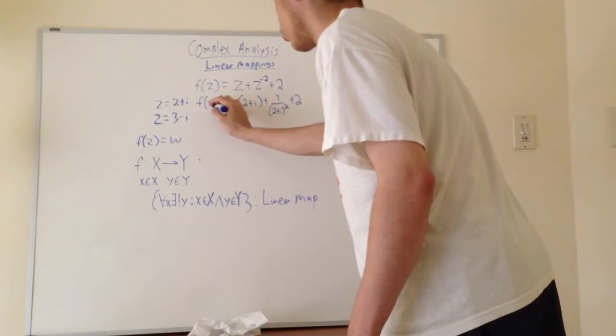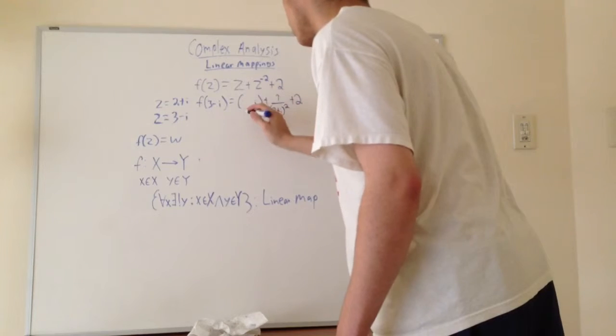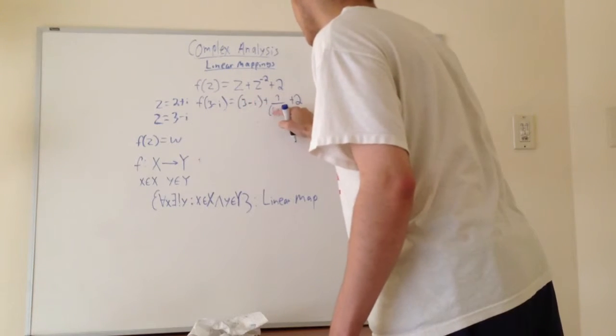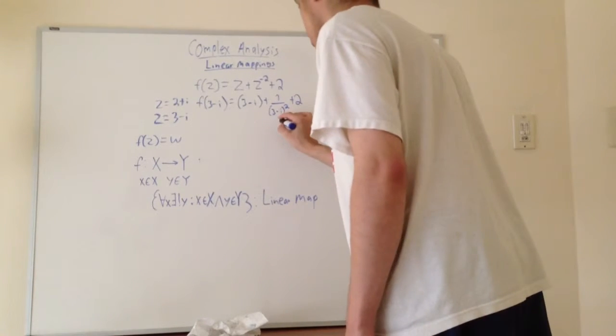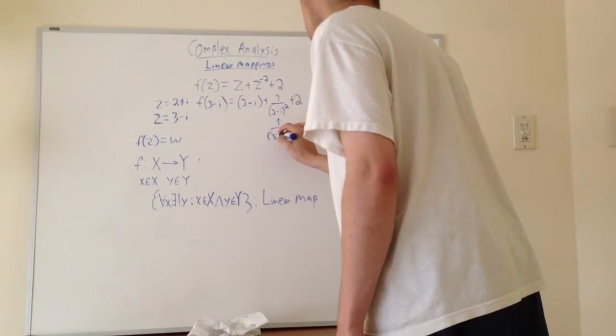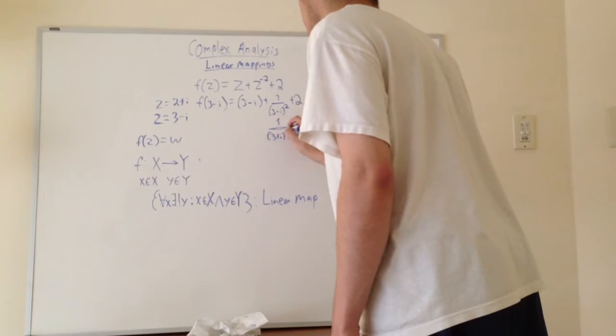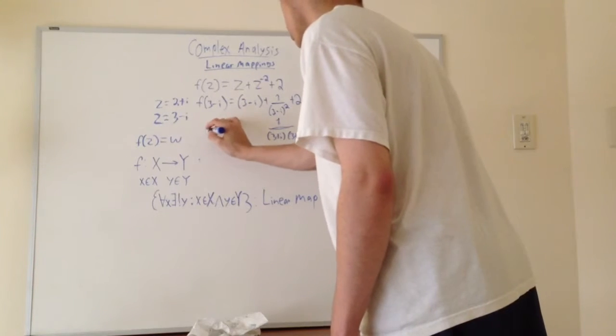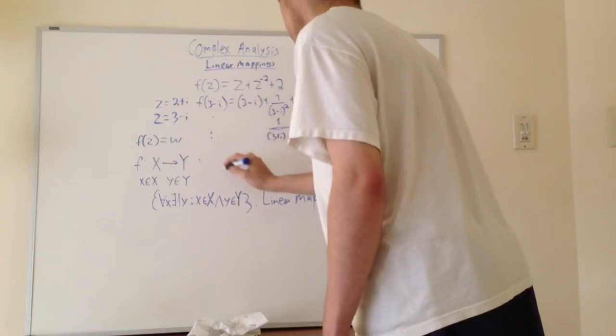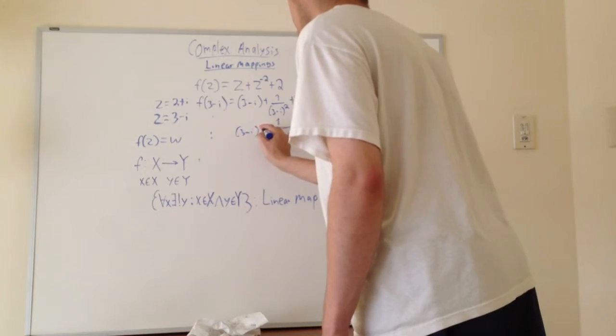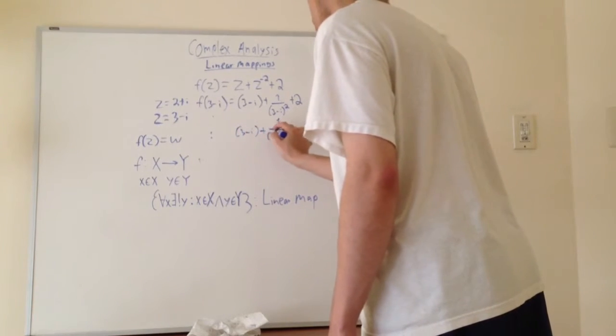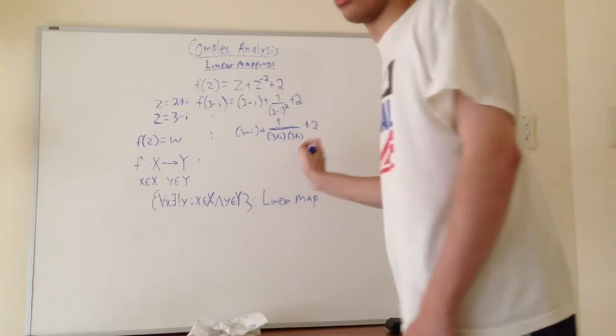So we're going to have 3 minus i. And so now, all we're going to do is the exact same thing. We're just going to go ahead and write this as 3 plus i times 3 plus i. And of course, you move the 2 alone. And now, we're just going to go ahead and expand out the denominator here.